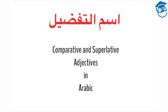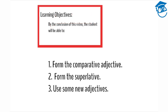The word we use to describe comparative and superlative adjectives in Arabic is ism al-tafdeel. By the conclusion of this video, the student will be able to: form the comparative adjective, form the superlative, and use some new adjectives.